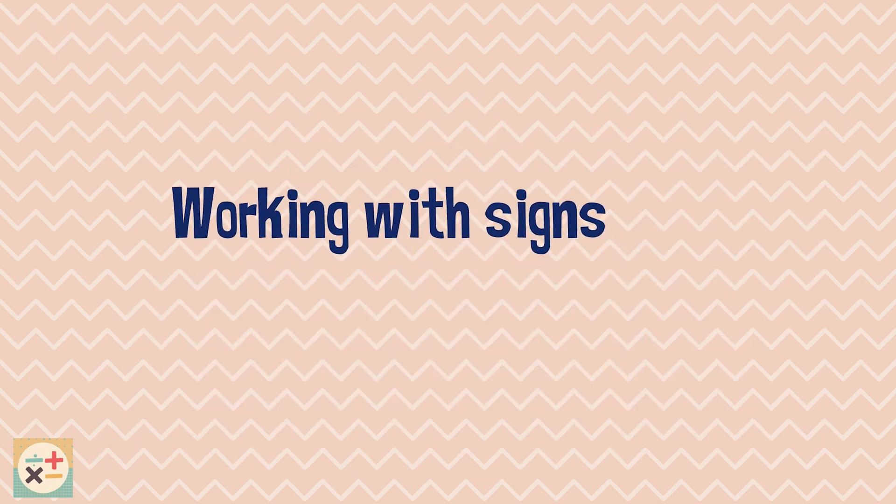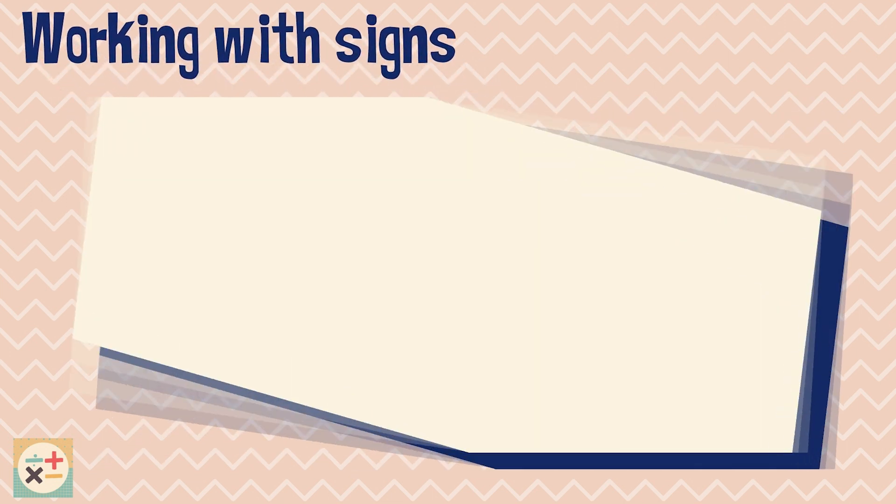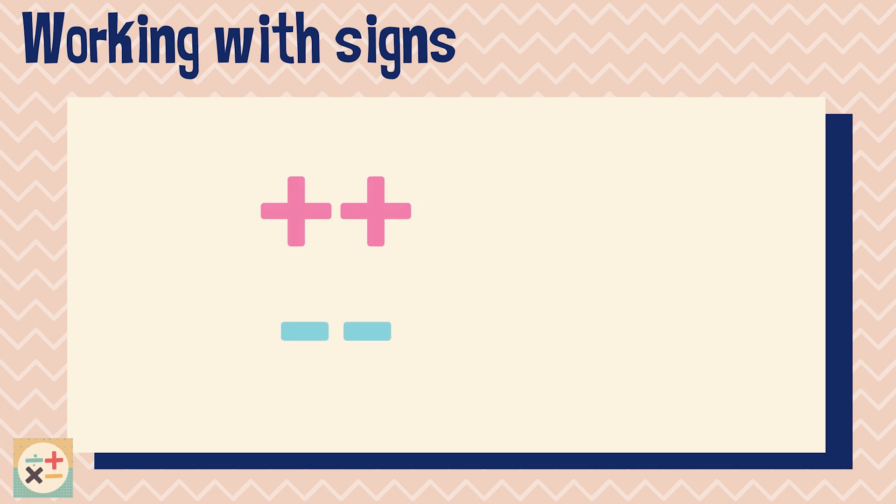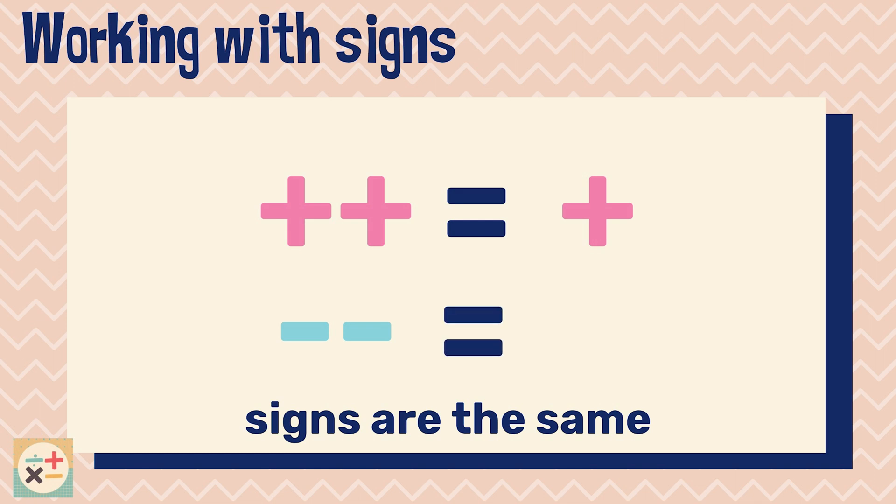When working with algebra, you'll be working with positive and negative numbers. When the signs are the same in your calculation, the resulting number will be positive. For example, two positives will make a positive, and two negatives will also make a positive.